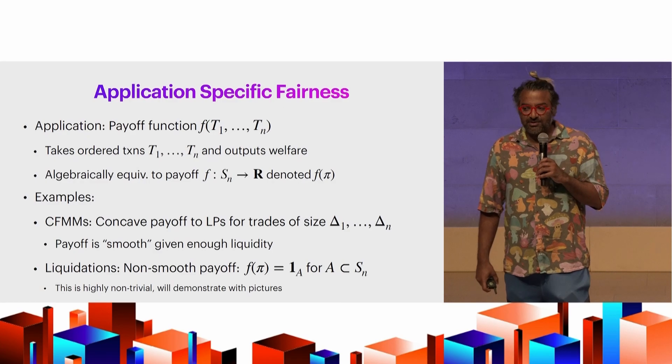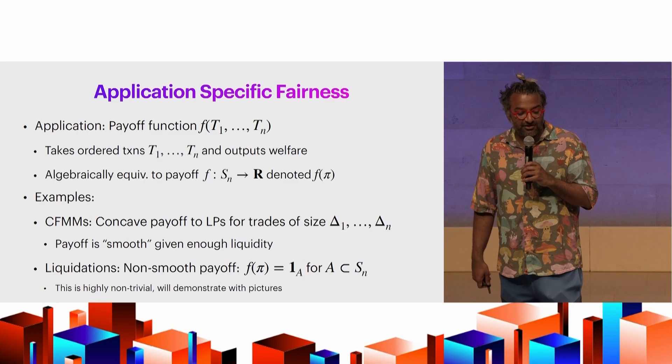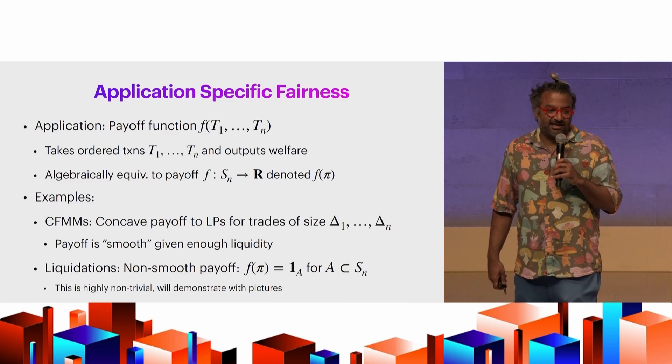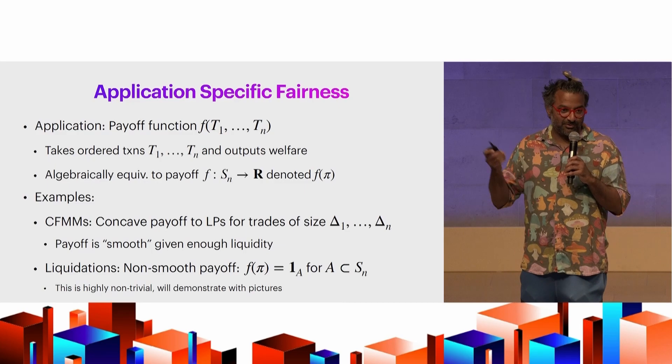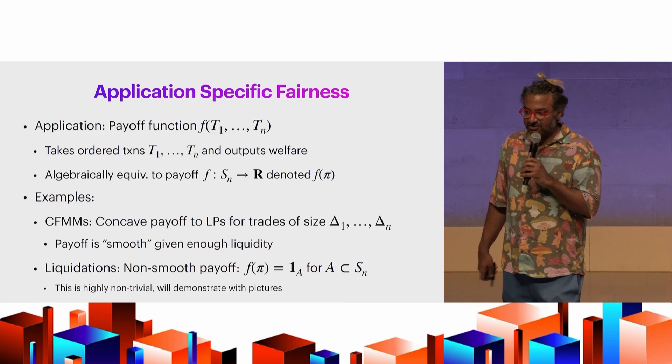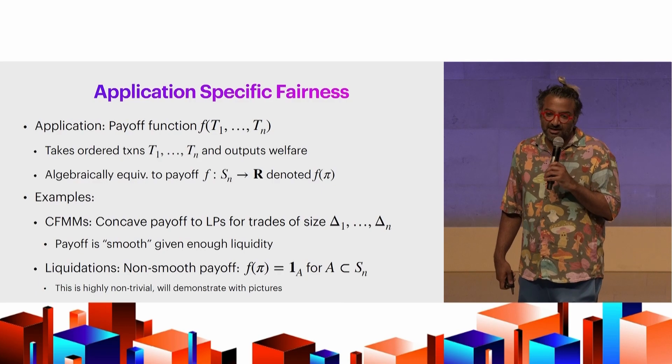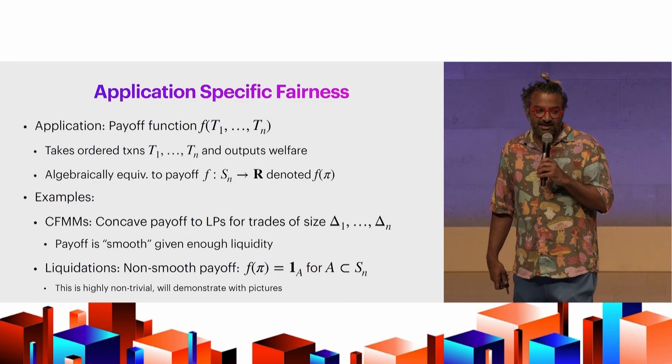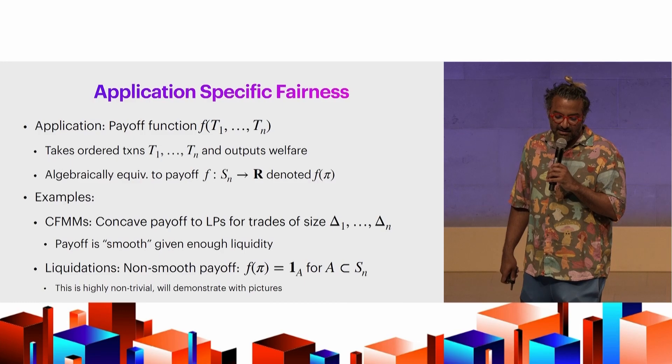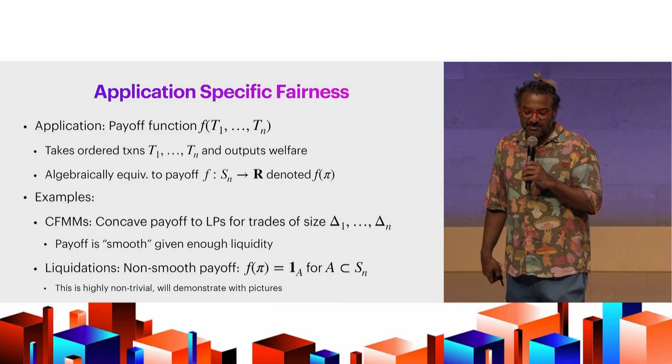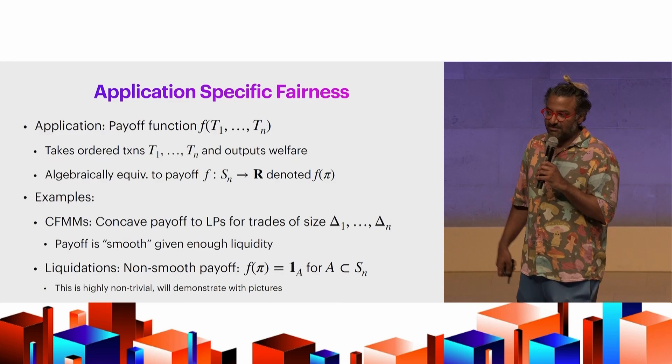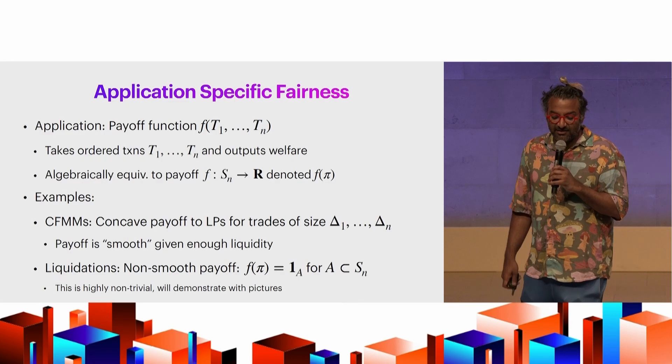So one important thing to think about is maybe fairness should be done on an application-specific level. So the analysis we'll talk about is from the perspective of there being sort of fixed universe of transactions. So adversary or malicious validator could have added or removed transactions before we analyze it. And the only actions that the malicious adversary can take are reordering transactions. And the key thing that we'll talk about is we're going to view these as these kind of payoff functions that depend on a permutation and give you a value, a real number.